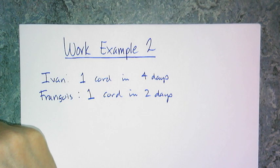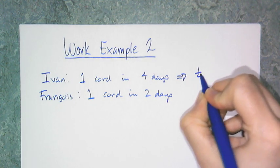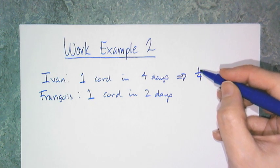The key is the work rate for each person, and Ivan's work rate is just one-fourth, because he can do one job, or split one chord, in four days.